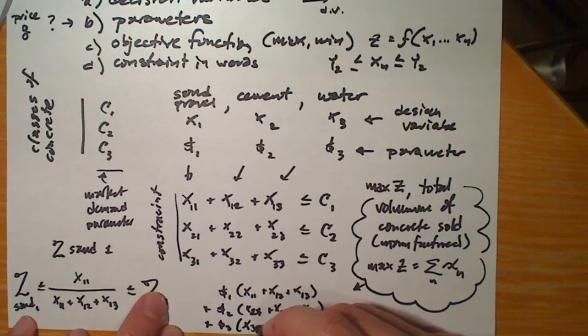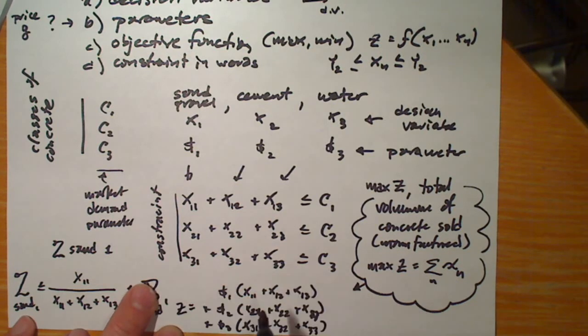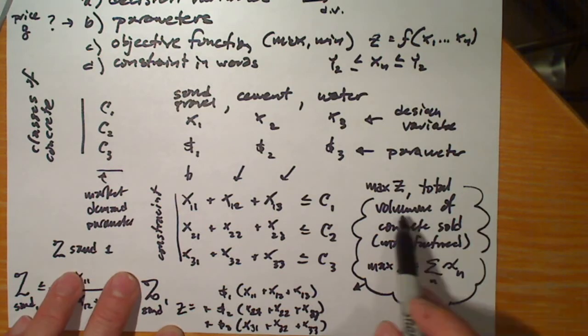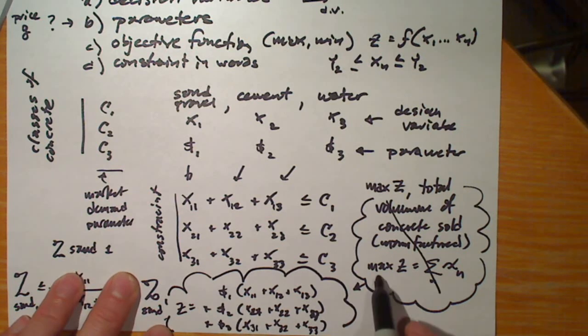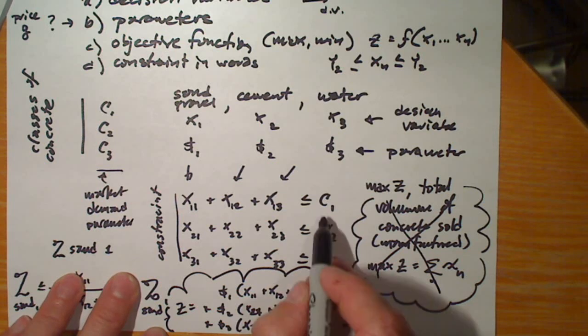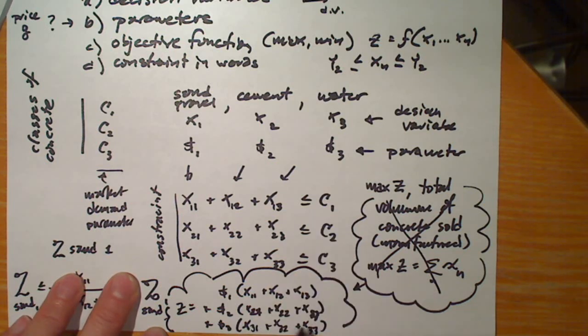In this case, if z is expressed in terms of profit taking these price parameters, then it's a little bit different than just total volume. Now the contractor might change what they want to manufacture based upon whether one mixed design is going to be more profitable than the others.